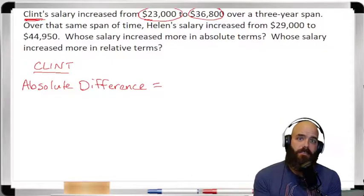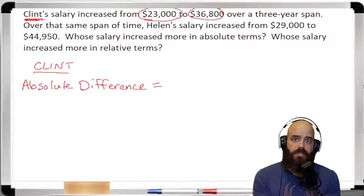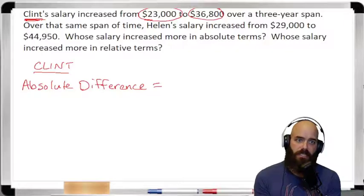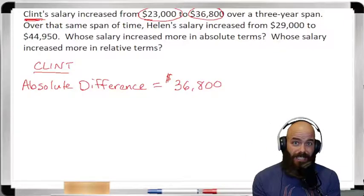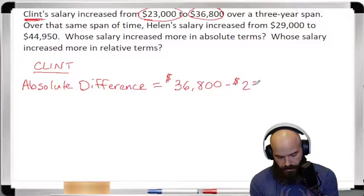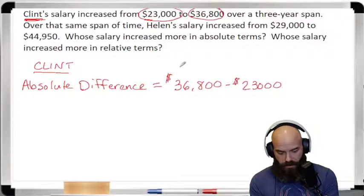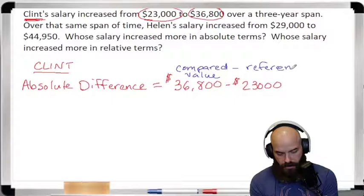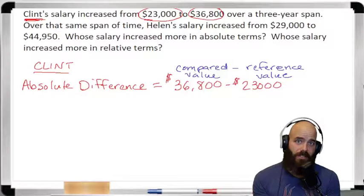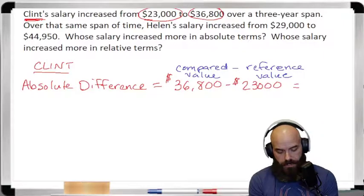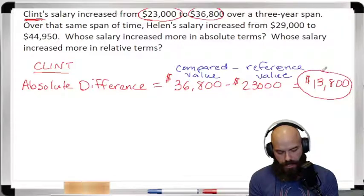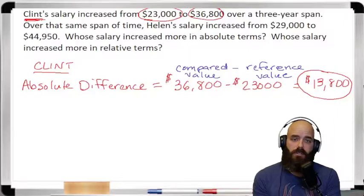His absolute difference is his compared value minus his reference value. We want to know how much he has gained in pay raises, so his compared value is his new value of $36,800, and we are comparing that to his salary at the beginning — $23,000 as the reference value. If you do that calculation you get $13,800. This represents how much money he has gained over three years in total pay raises — that's his absolute difference.